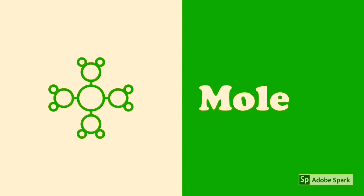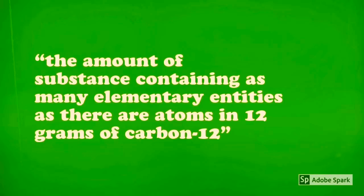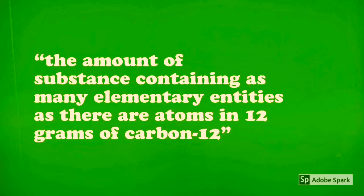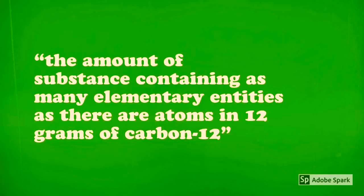Finally, the SI unit for amount of stuff is the mole. The mole can be defined by whatever is written here, but more simply, a mole is just the number 6.02 times 10 to the 23rd power, literally. For example, a mole of ice cream would be 6.02 times 10 to the 23rd power ice creams.